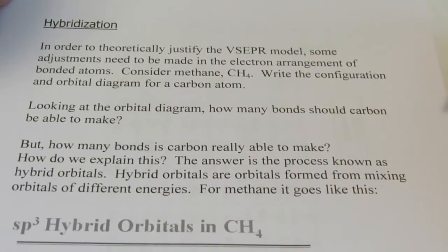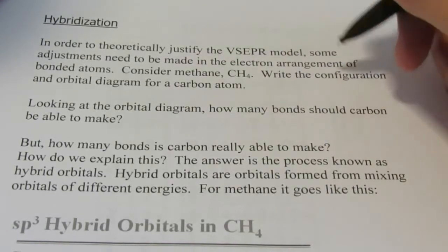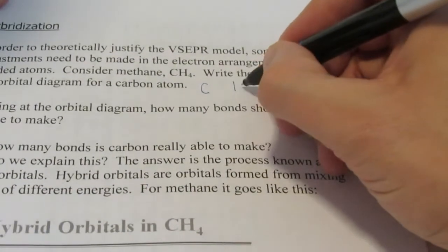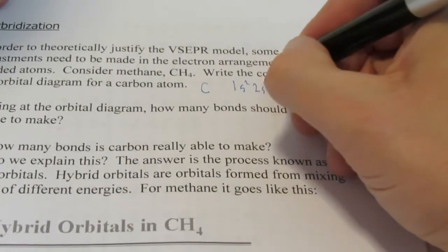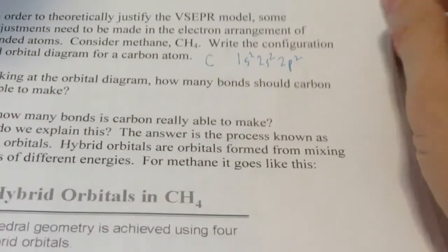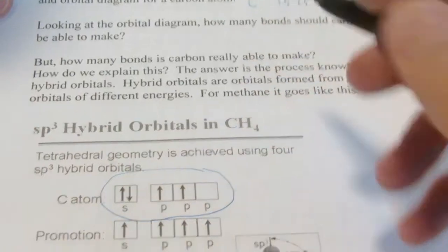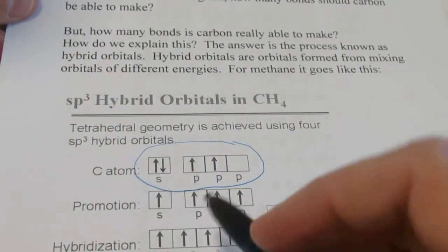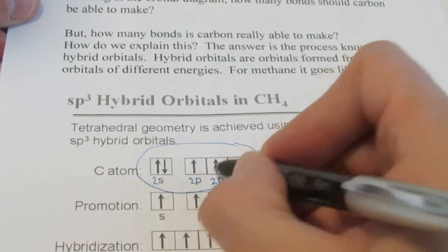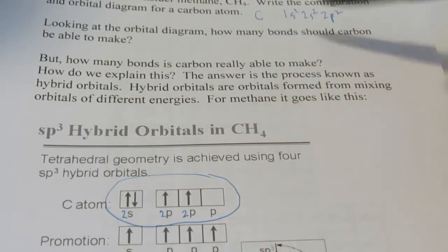If we consider methane CH4, remember we drew that Lewis structure, predicted its shape, bond angle and polarity. We would write the electron configuration and orbital diagram for carbon. Well let's see. For the carbon atom, it's 1s2, 2s2, 2p2. That's the electron configuration. Now the orbital diagram is right down here. That's plain old vanilla carbon. At least for the outer electrons. So we have 2s2 and then 2p2. So looking at that orbital diagram, how many bonds should carbon be able to make?